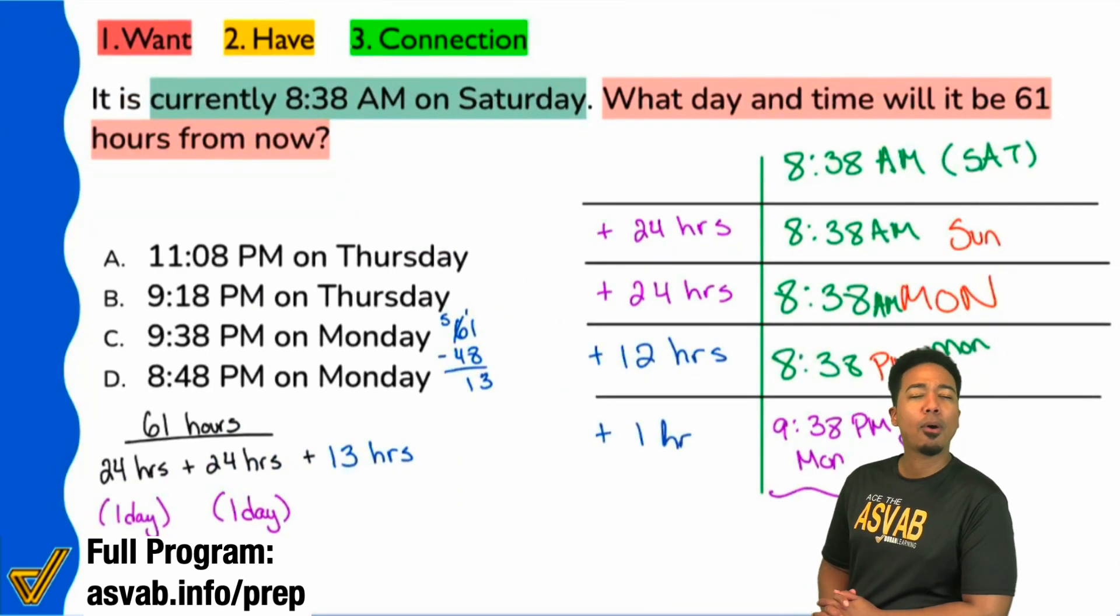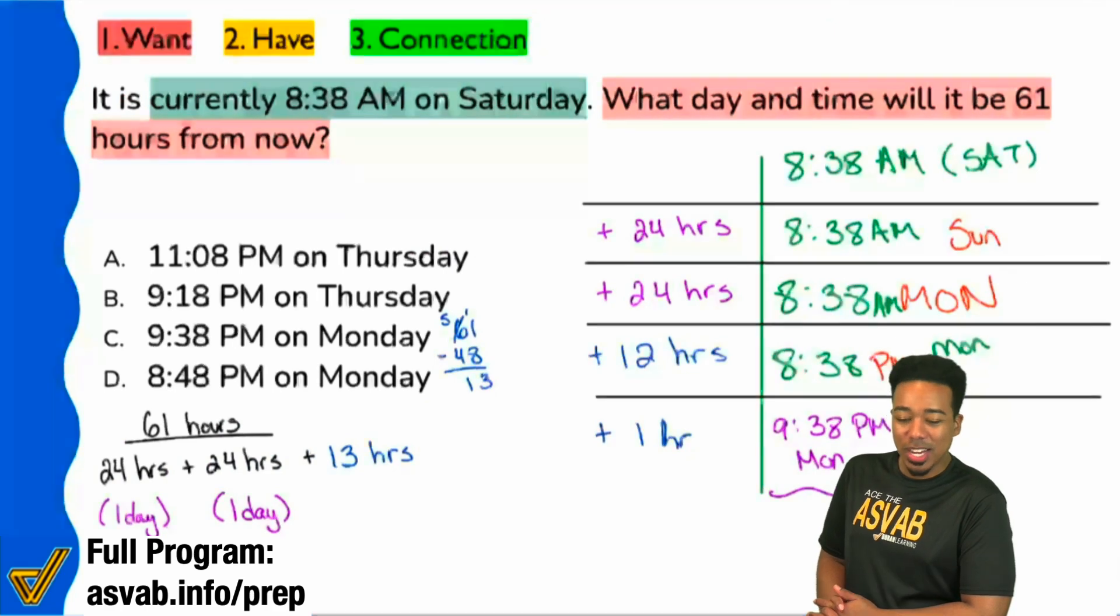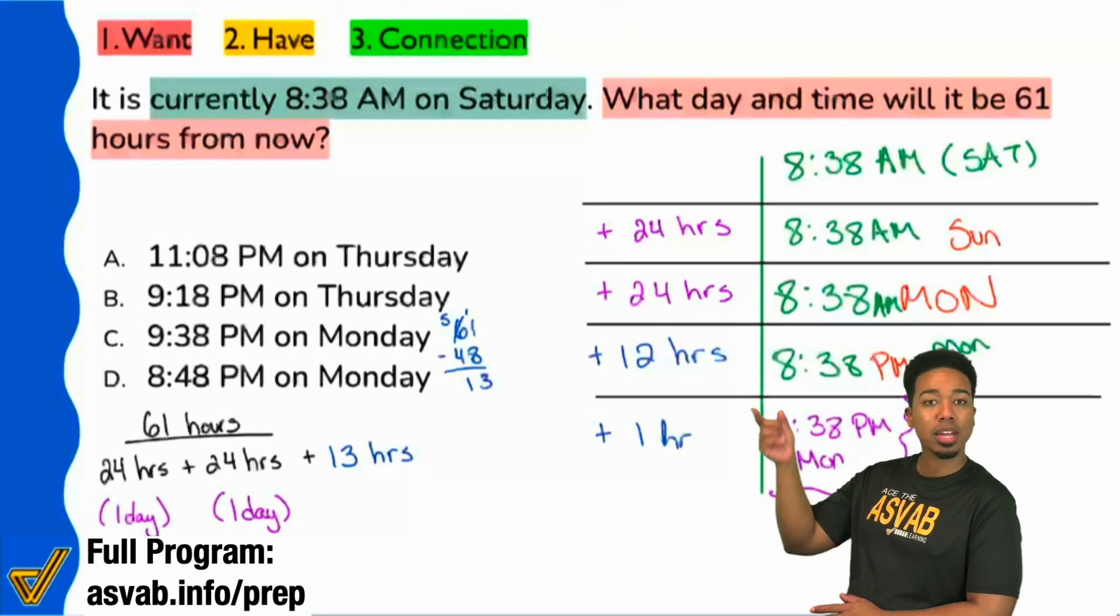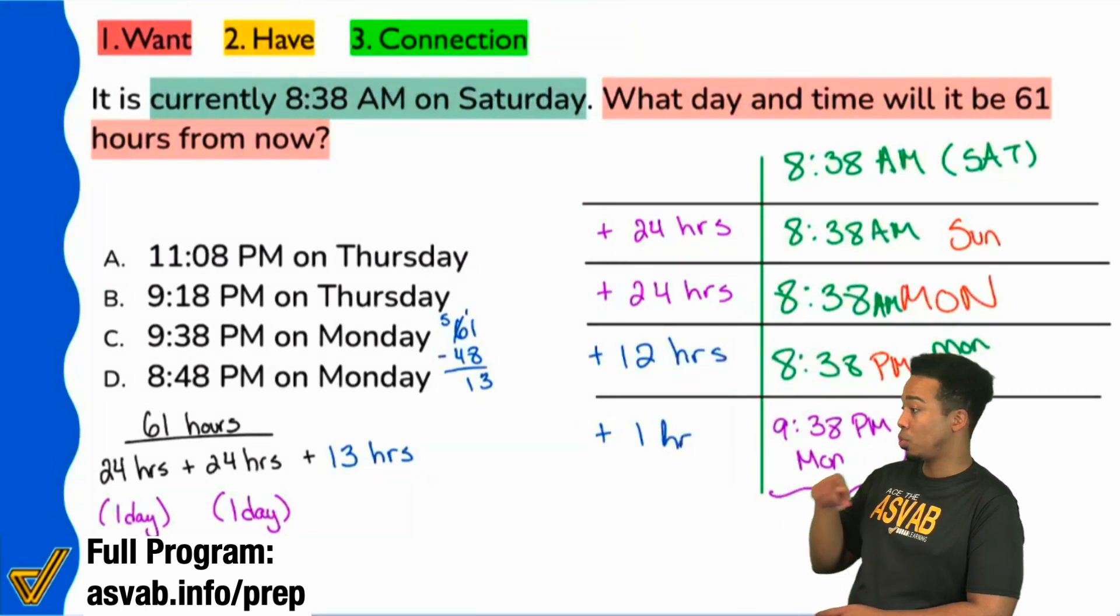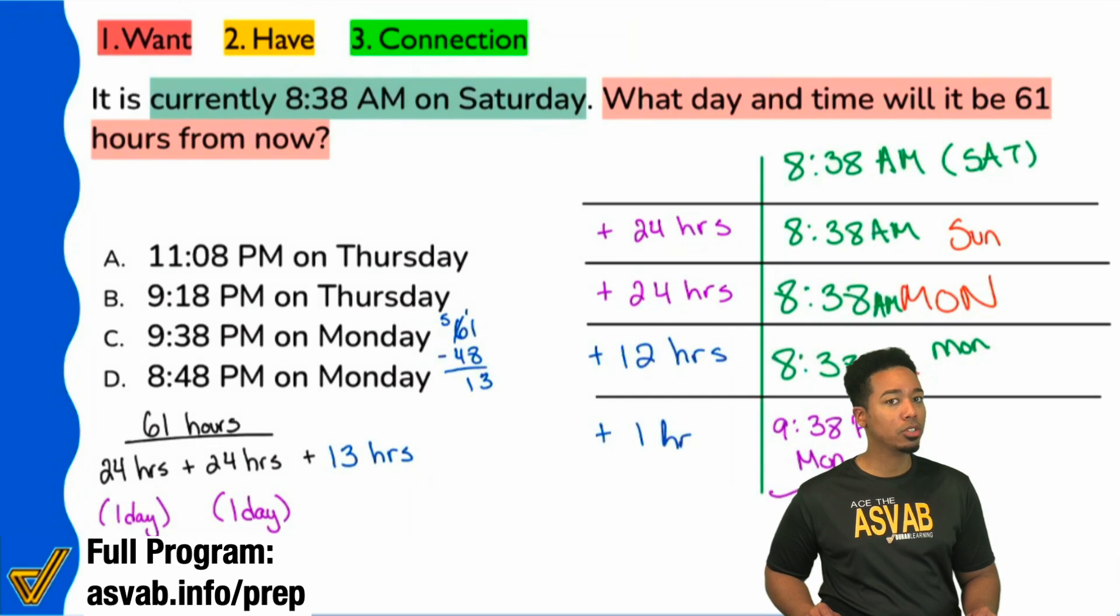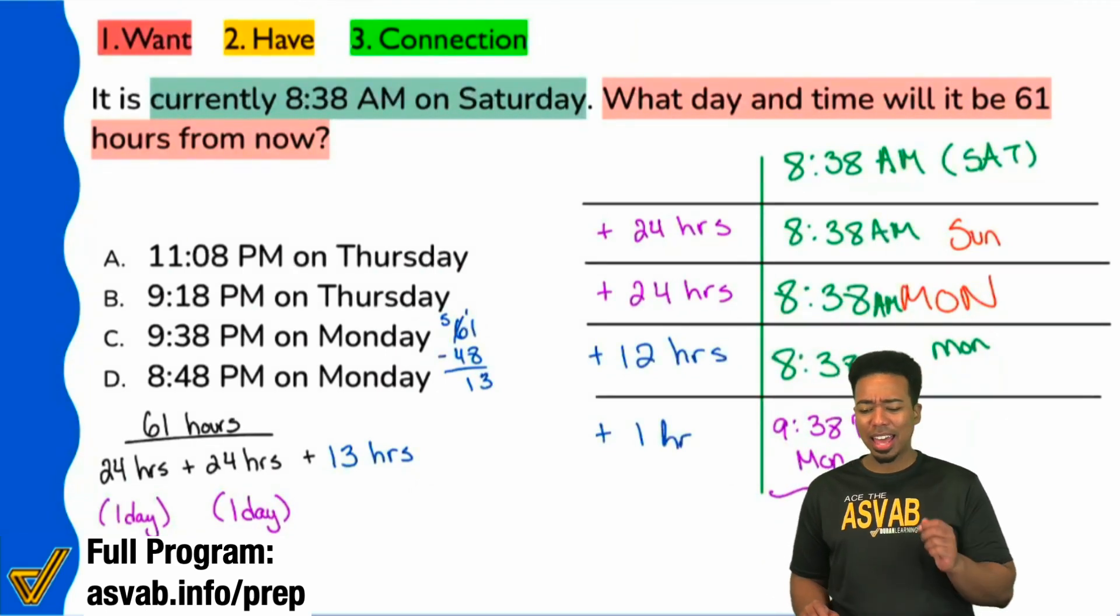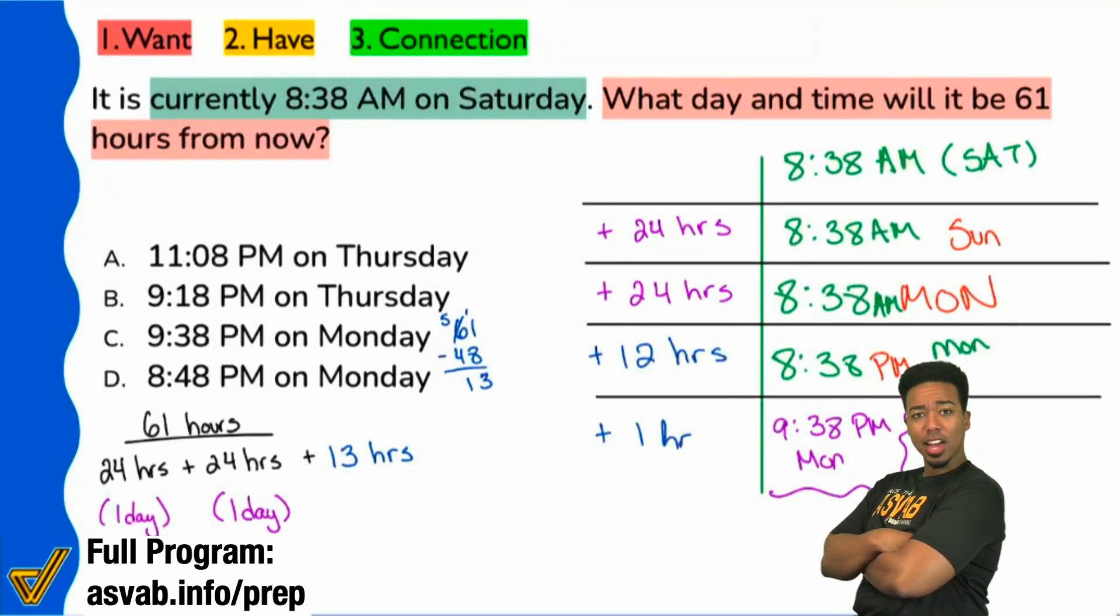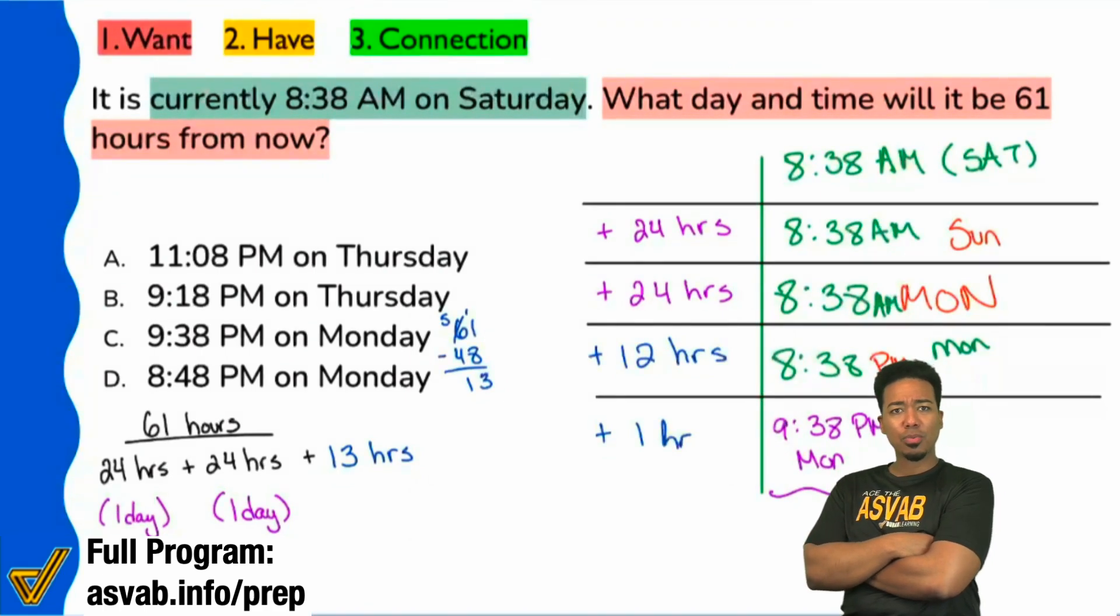When we take a look at the answer choices, think about what we just said. We talked about if we go every 24 hours, that's going to be the same time next day. If we go 12 hours, that'll be from AM to PM, and you think about what to do from there. However, did anything that we did change the actual minutes? Did anything that we did change the minutes? No.